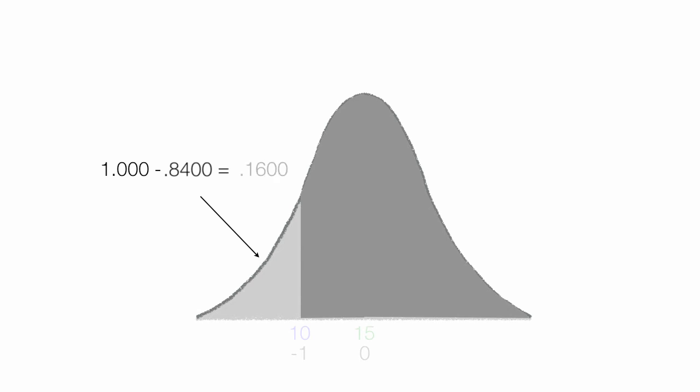which is 0.16, or 16%. So 0.16 is the probability of an observation being less than 10.